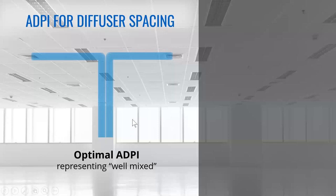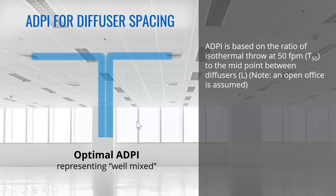In doing diffuser selection, we need to start with how we describe how air moves in a large space. We spent a lot of time talking about the open plan office. ADPI was developed back in the 1960s. The air diffusion performance index is a measure of how jets collide in an open plan office with multiple diffusers. It's based on the ratio of the 50-foot-per-minute throw to the distance halfway between the diffusers. At that point, the jets collide and fall into the space, and the goal is to control that.